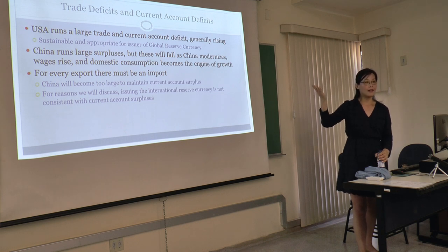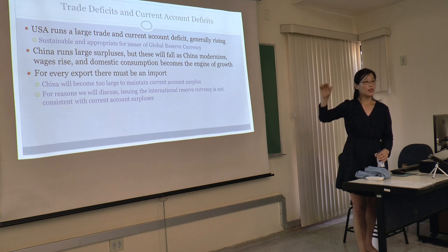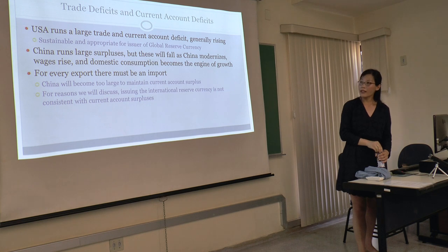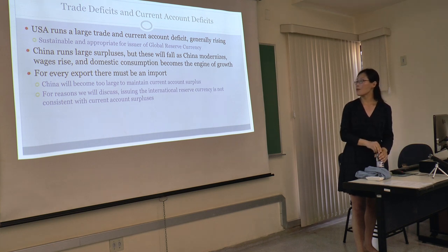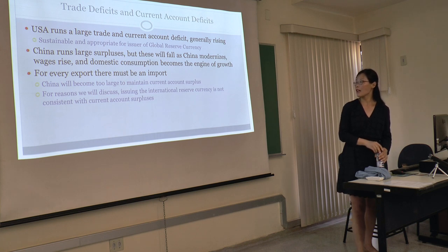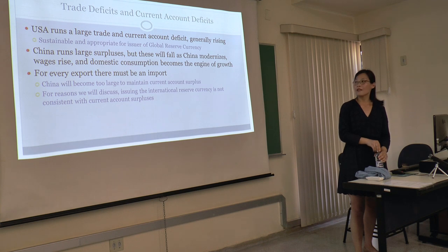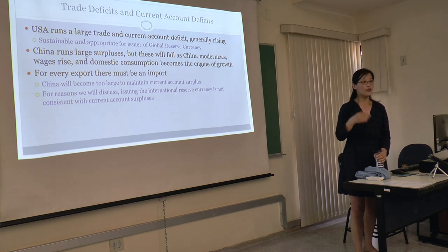Why can the US dollar be the international reserve currency? Because they always run a current account deficit, the economy is growing, and the rest of the world can always have dollars available. China, on the other hand, runs a large surplus. This will fall as China modernizes, but not too much so far. Wages rise and domestic consumption becomes the engine of growth. But as we've discussed, being the international reserve currency is not consistent with running a current account surplus — if you have a surplus, you cannot let the rest of the world have your currency. That's the problem.